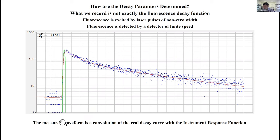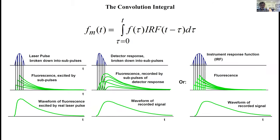In fact, the measured waveform is a convolution of the real decay function with the instrument response function. So what is an instrument response function? What is convolution? Most of you probably have seen the convolution integral. This is pure mathematics, but the integral doesn't tell you exactly what's actually going on in terms of signal processing.